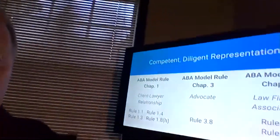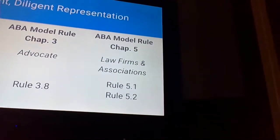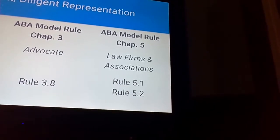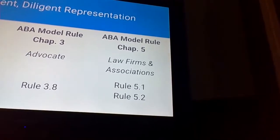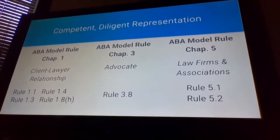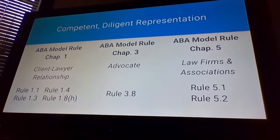Now to round out today's theme, let's look at the rules beyond chapter one. We've already covered those parts of chapter one and just wrapped up Rule 1.8(h). The last parts of the roadmap are Rule 3.8, which applies to criminal law prosecutors, and Rules 5.1 and 5.2, which talk about law firms and associations — specifically the duties of a supervisor in Rule 5.1 and the duties of a subordinate lawyer in Rule 5.2.